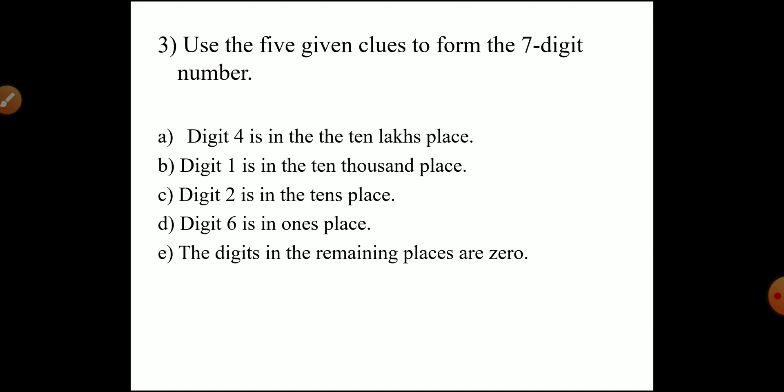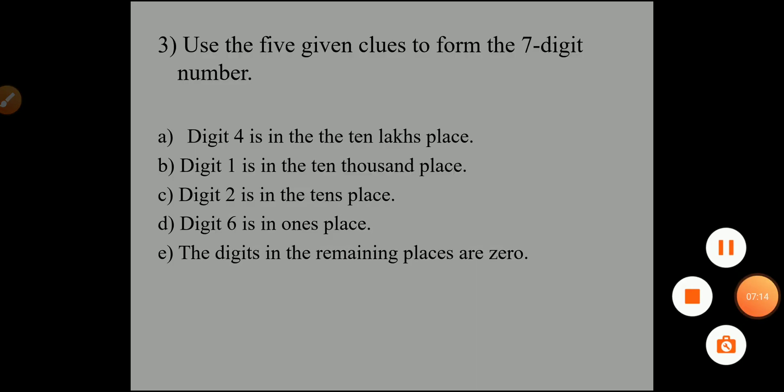Question 3: Use the five given clues to form a seven-digit number. The clues are: digit 4 is in the ten-lakh place, digit 1 is in the ten-thousands place, digit 2 is in the tens place, digit 6 is in the ones place, and the remaining places are zero. Make the place value chart, fill in all the given values, and put zero in the blank columns. I hope you all understood the topic. Thank you and have a nice day!